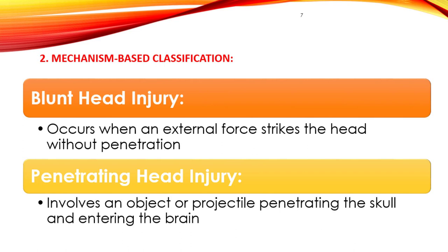Blunt injury results from falls, motor vehicle crashes, assaults, or sports-related impact, while penetrating injury results from gunshot wounds, sharp objects, or similar mechanisms.